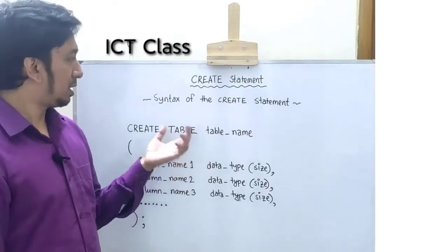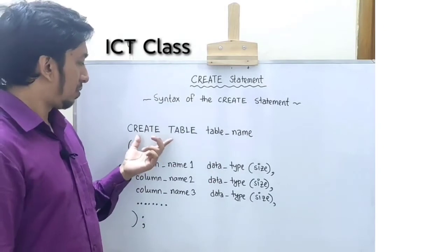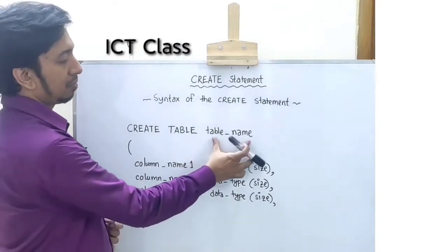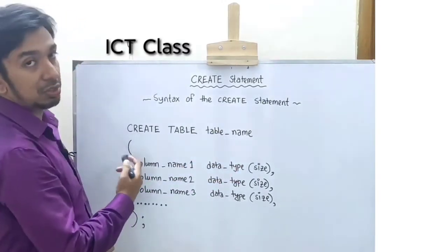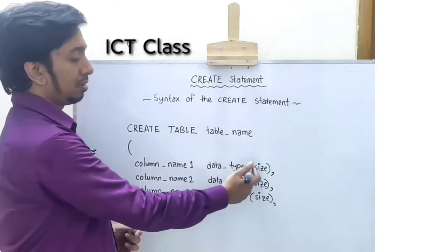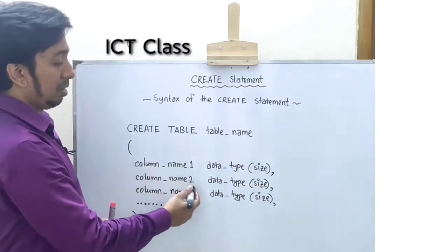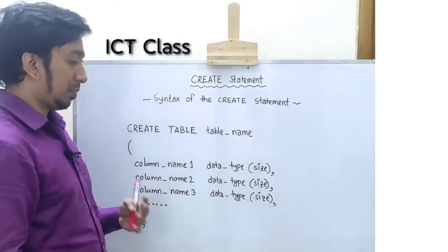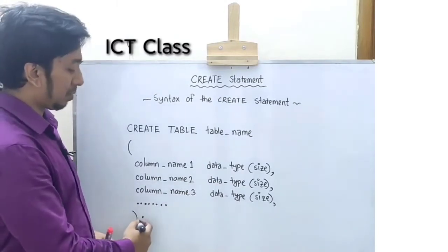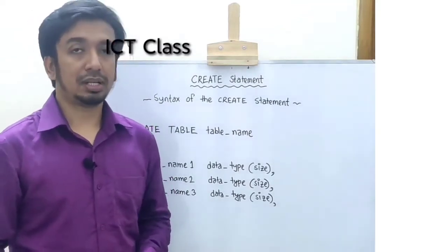Here on the board you can see the syntax of the CREATE statement — how to write it. First of all you have to write CREATE TABLE, then a space, then the table name. Then start with an opening bracket, then the first column name and data type with size, a comma, and again if you want to add more columns: column name, data type, size. You can add more columns, and so on, then close the bracket and semicolon. This is the actual syntax of the CREATE statement. Let's see an example.